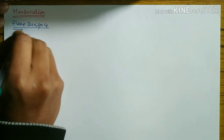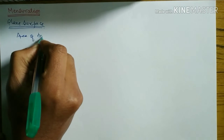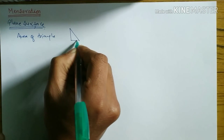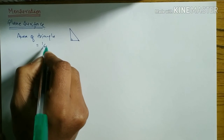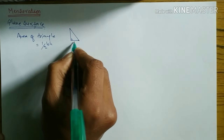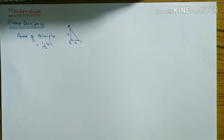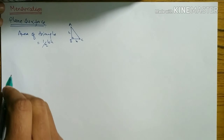The first formula of plane surface is area of triangle. When the triangle is in the form of a right angle, the formula is: area of triangle = half × base × height. Here BC is the base and AB is the height.